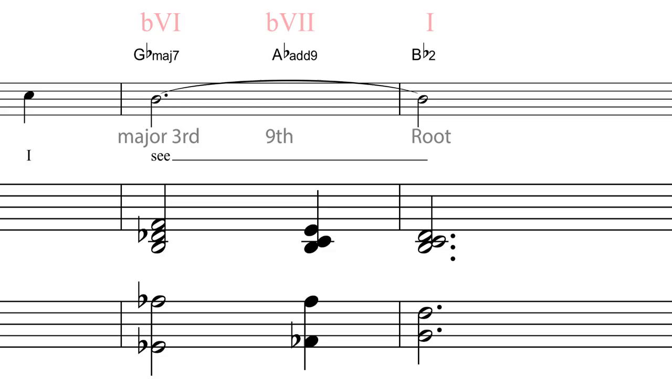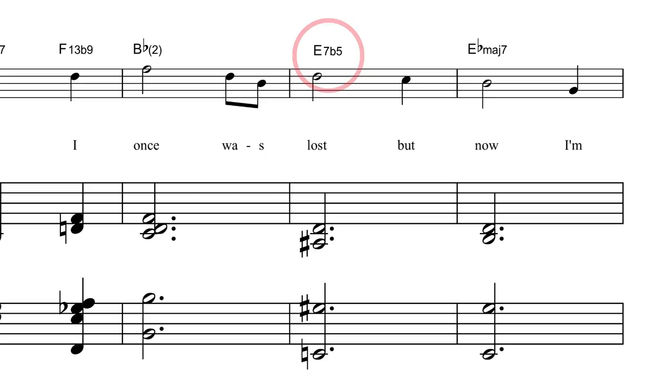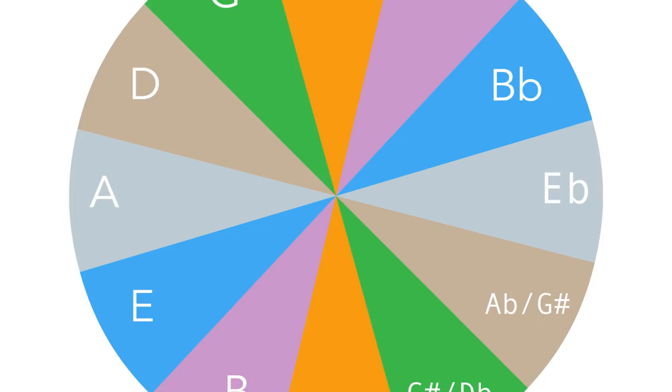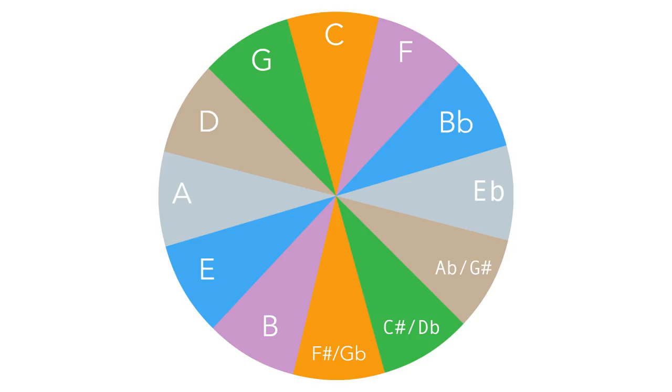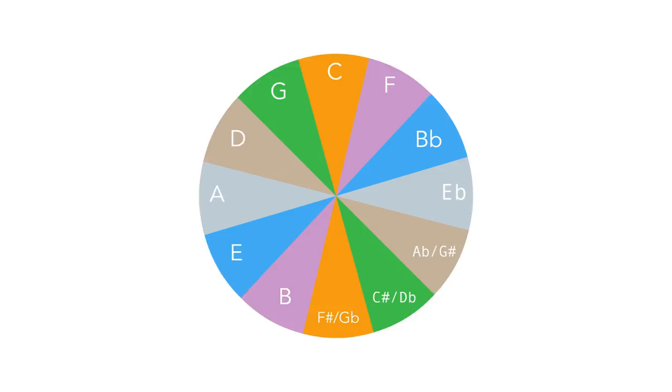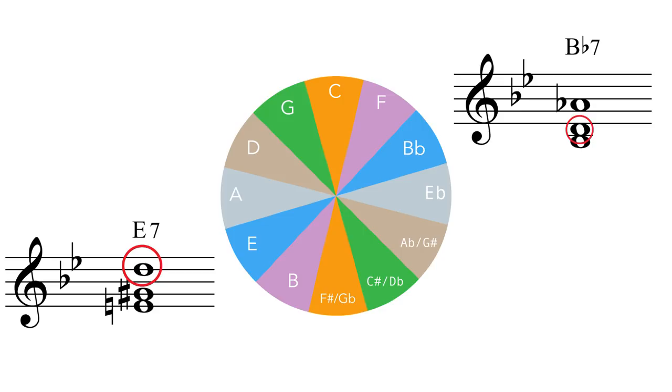The next big harmonic change to highlight in this version is bar 10, the E7 flat 5. This is the tritone substitute for B flat 7, and both chords contain the same 3rd and flattened 7ths. The 3rd of B flat 7 is D natural and it becomes the flat 7 of E7, and the 3rd of E7 G sharp becomes the flat 7 of B flat 7, A flat.